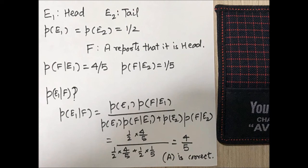And this is probability of E1 intersection F divided by probability of E1 intersection F plus probability of E2 intersection F. And that can further be taken as P(E1) into P(F over E1) divided by P(E1) into P(F over E1) plus P(E2) into P(F over E2). And by putting the values we can directly get the answer.